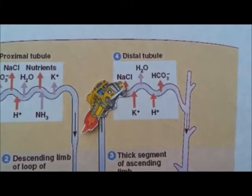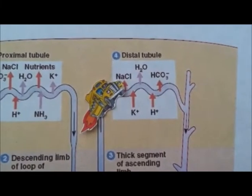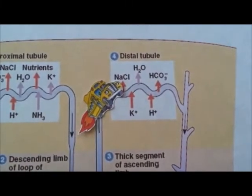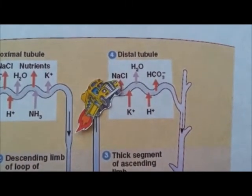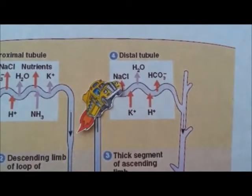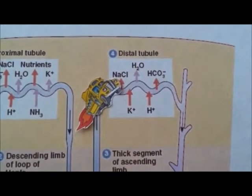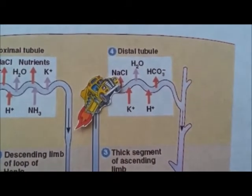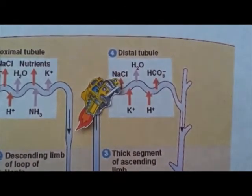The distal convoluted tubule is where the class finds themselves next. This is where secretion of toxins, ions, acids, and drugs occurs.